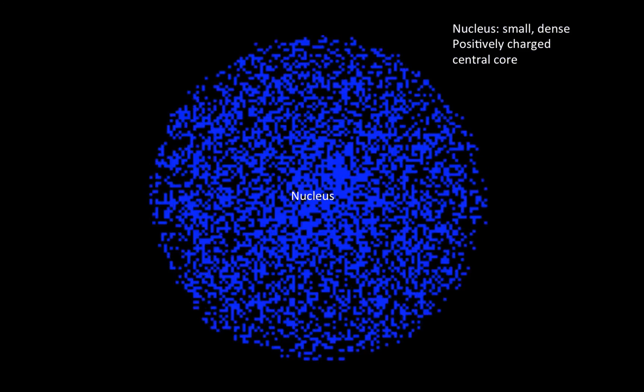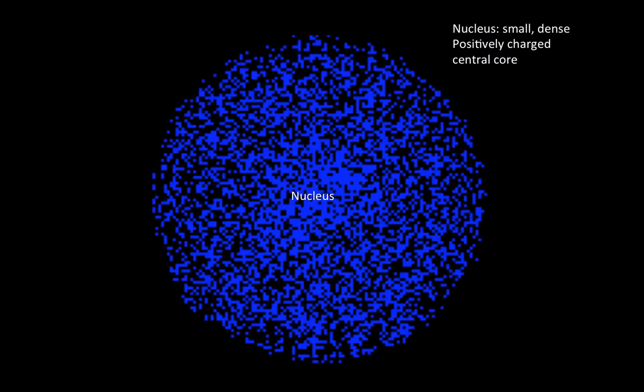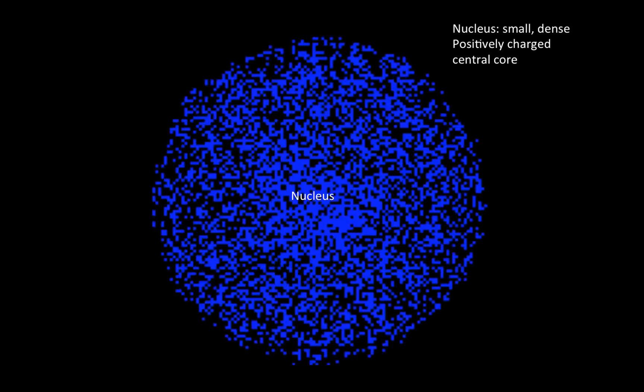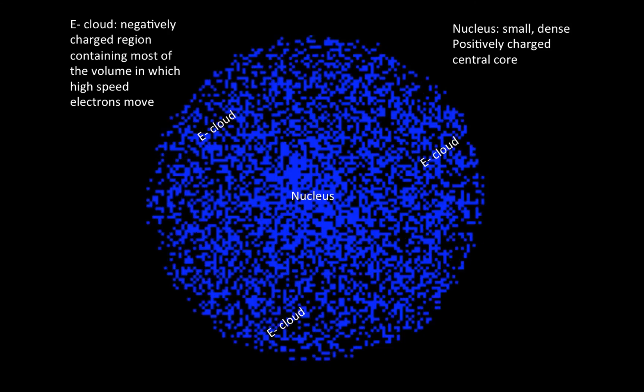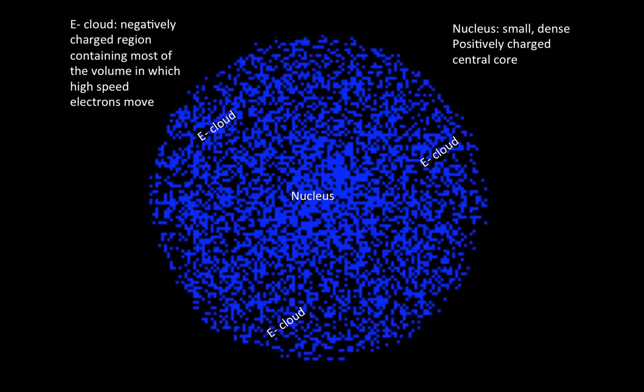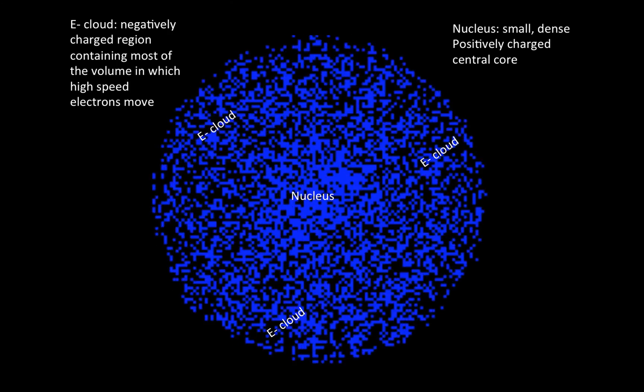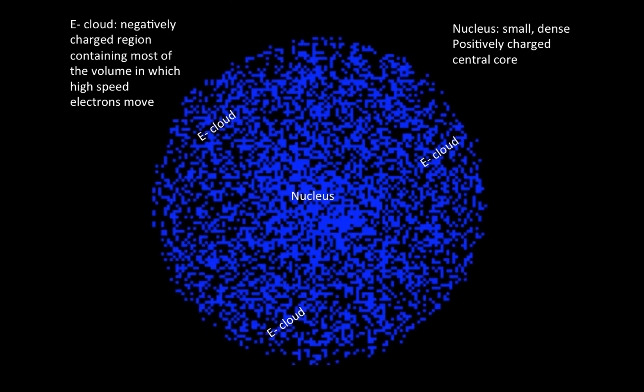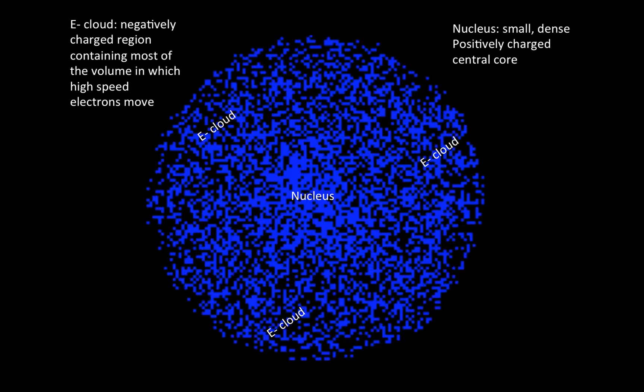The essence of the modern atomic theory is that all matter is made up of tiny particles called atoms. Atoms consist of a small, dense, positively charged central core called the nucleus. The nucleus is surrounded by a cloud of high-speed, negatively charged electrons. The electron cloud takes up the majority of the volume of an atom, while the nucleus contains most of the mass.